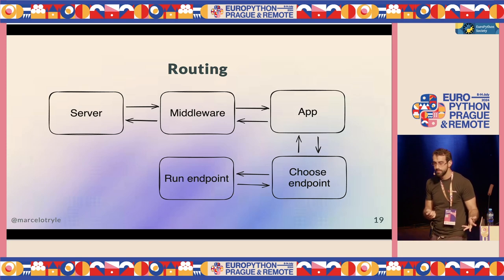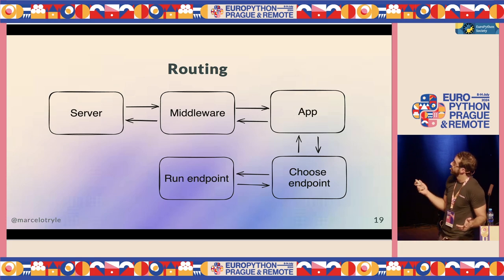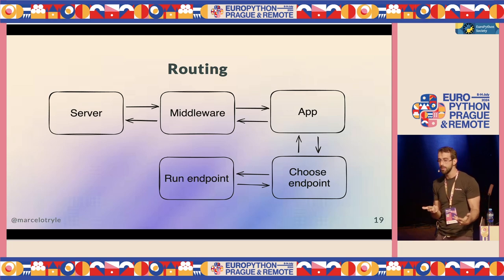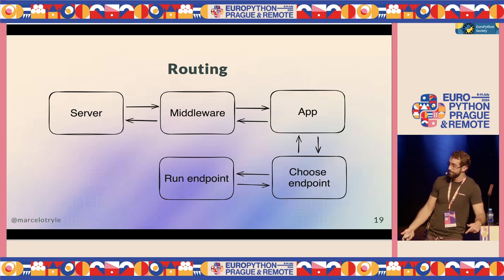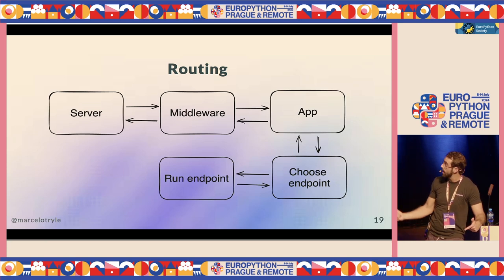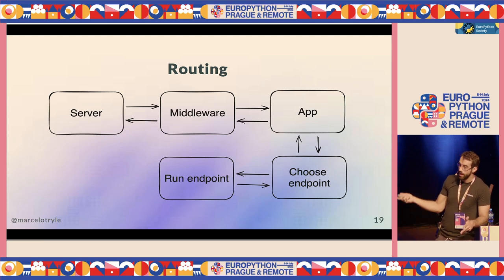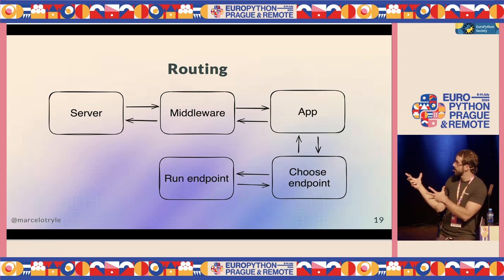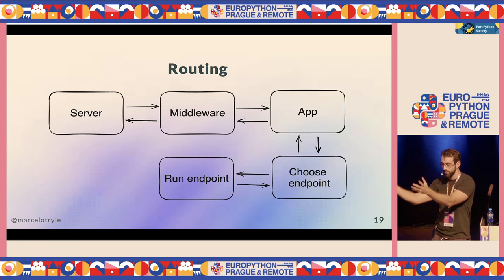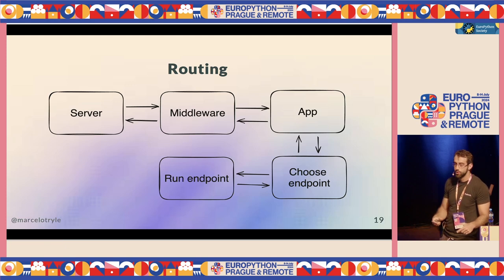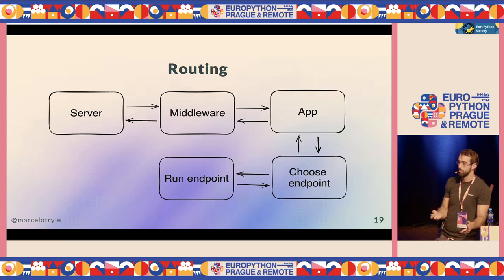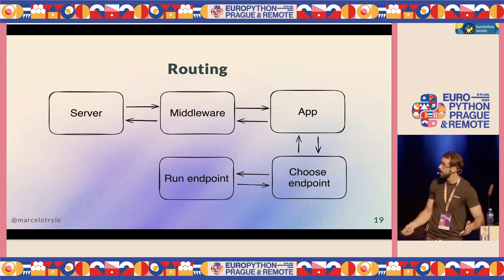After the middleware, you have the routing. The server calls the middleware, the application is called, and when the application is called internally, you choose which endpoint is going to run. One interesting thing is that the choice of endpoint — the routing — comes after the middleware. So if you need information in the middleware about which endpoint is going to run, you actually don't have it, because the middleware runs first and is not aware of what comes after.